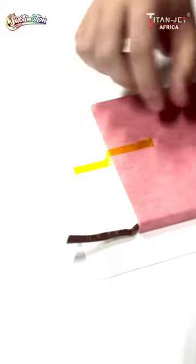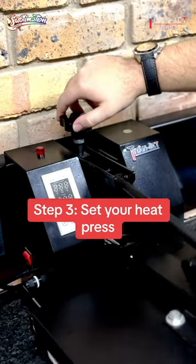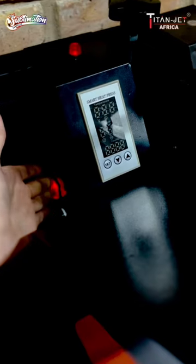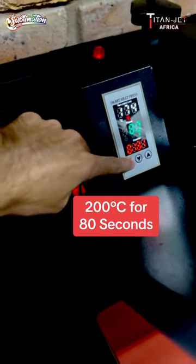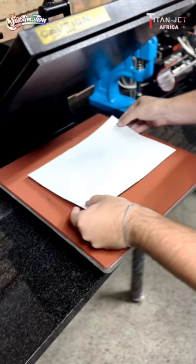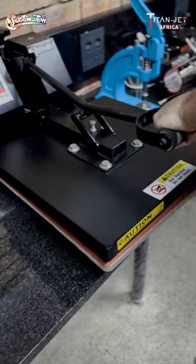Use sublimation tape to hold the design firmly to the book. Step 3: Adjust the heat press clamp to the desired pressure for your notebook and preheat your heat press to 200 degrees Celsius for 80 seconds. When complete, place the book in the heat press and clamp down.